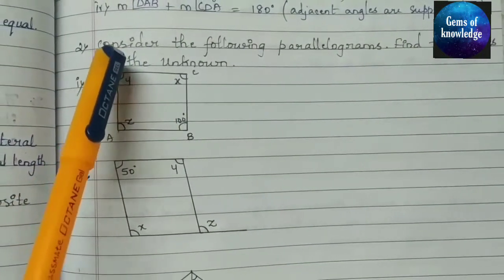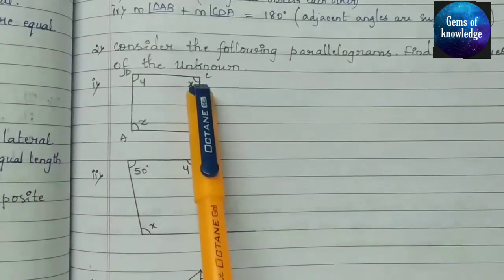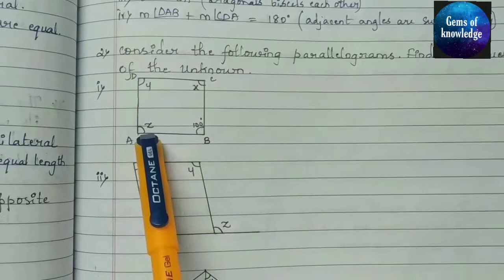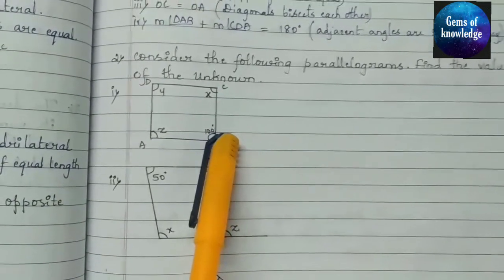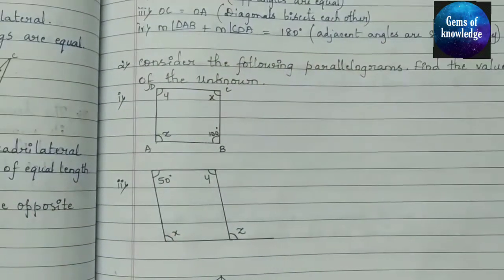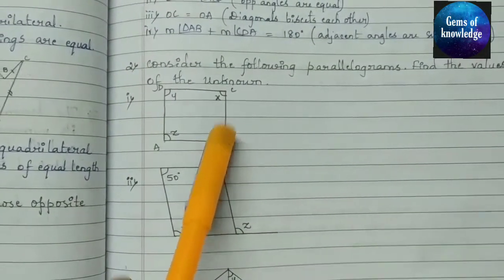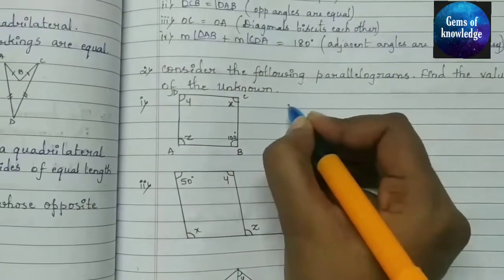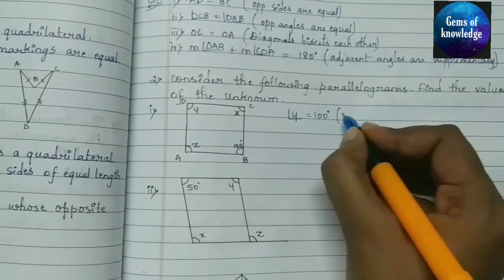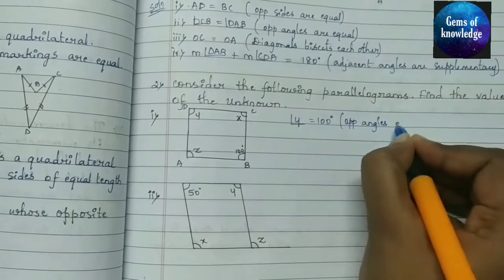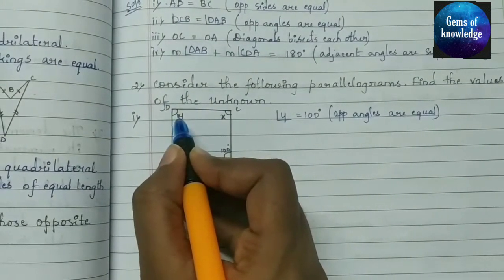Question 2: Consider the following parallelograms and find the values of the unknowns X, Y, and Z. In the first parallelogram, angle B is 100 degrees. Since opposite angles are equal, angle Y equals 100 degrees. For angle X, adjacent angles are supplementary, so X plus 100 equals 180 degrees, giving X equals 80 degrees.